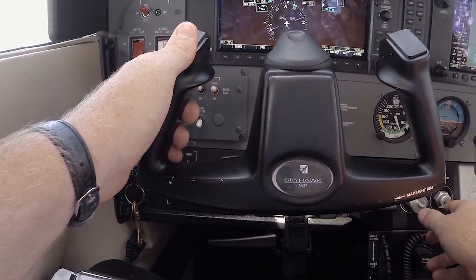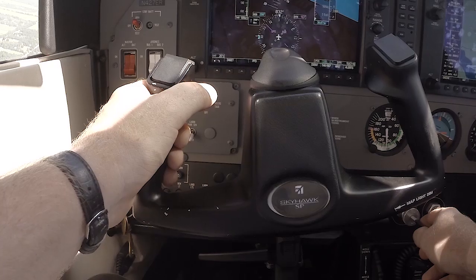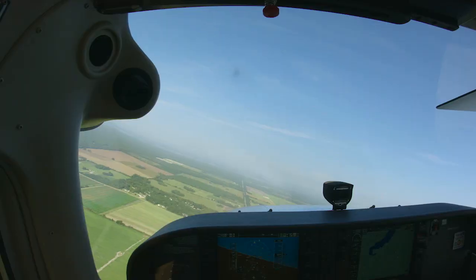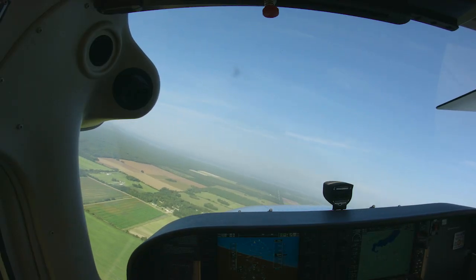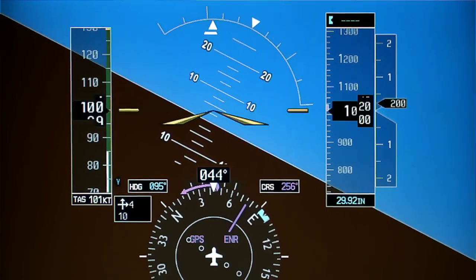The back pressure on the yoke will have to be increased when flying downwind, where you use the greatest bank, and decreased when flying upwind, where you use the shallowest bank. Back up the attitude indicator with your altimeter and VSI to maintain your altitude.